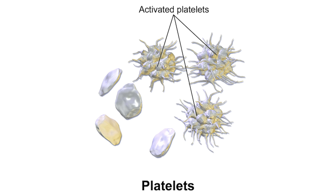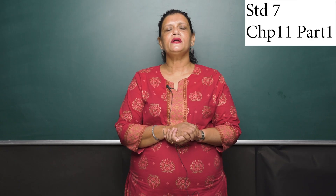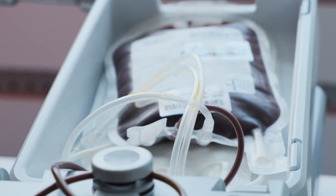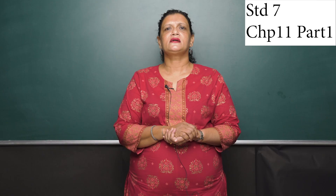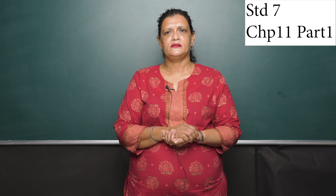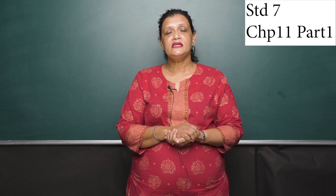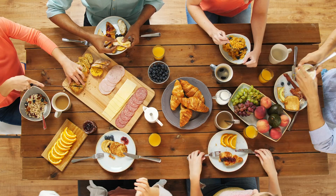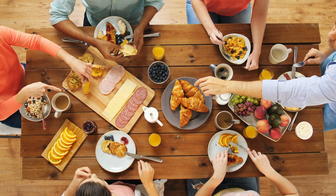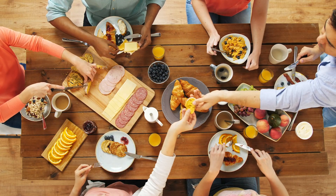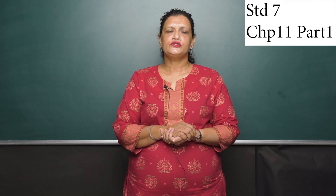Blood is such an important component that cannot be manufactured or produced in a laboratory, so we need to encourage people to go in for blood donation. We must also remember that when we donate blood, the body automatically produces enough blood for our survival. It must be remembered that we need to have a diet which will contribute to the formation of our red blood cells, the white blood cells and the platelets in the required measure for our body.